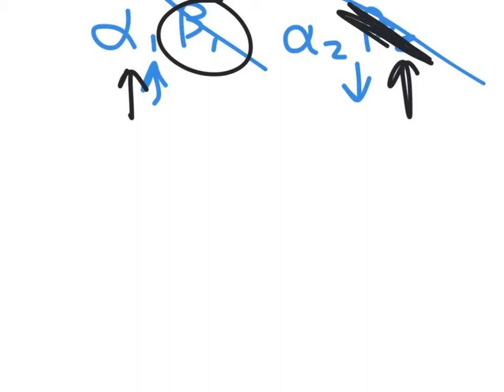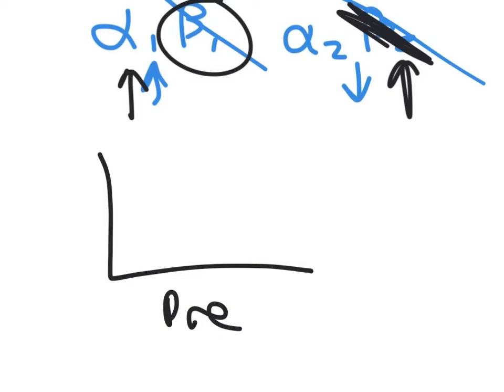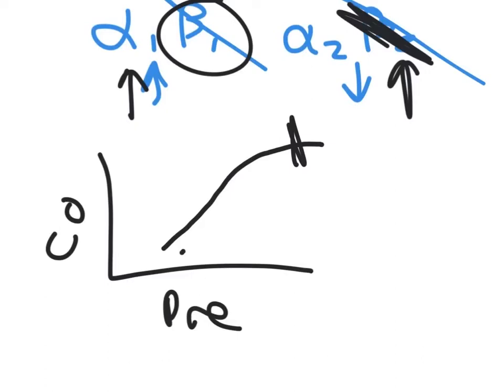If I blocked beta-1, I decrease inotropy and chronotropy. If I look at my preload and the cardiac output or stroke volume, there's a Starling curve showing basically a linear relationship up to a certain point — as I increase the preload, more is going to be put out. Whenever you give a beta blocker, that is how it decreases blood pressure: it adjusts this Starling curve, giving a lower curve. For a given preload, I'm going to have less output.